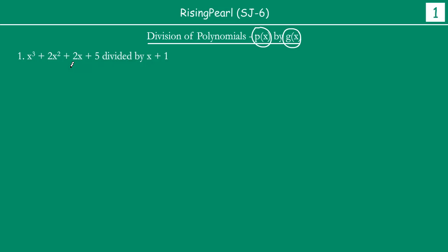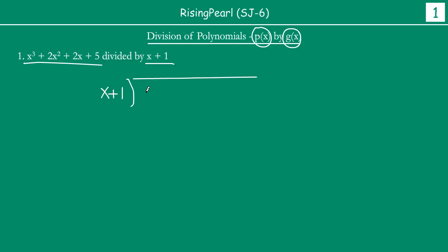We have written some polynomials to make it easier and faster. In the first example, we have a polynomial x³ + 2x² + 2x + 5. This is our first polynomial, and then we are going to divide this with our second polynomial, x + 1. So let us go ahead with the division. Our divisor is x + 1, and our dividend is x³ + 2x² + 2x + 5.